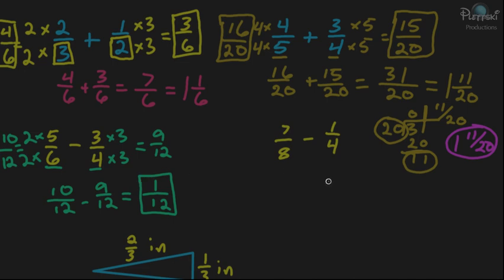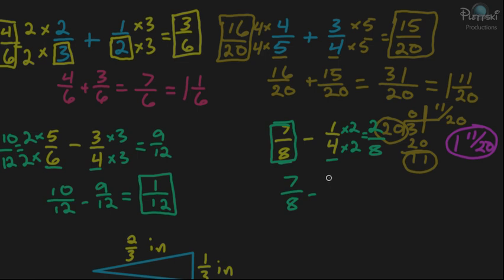One more subtraction problem: we have 7 eighths minus 1 fourth. You need like denominators, and in this case the least common multiple of the denominators is 8. An 8 goes into 8 once, and a 4 goes into 8 two times. So 7 eighths we don't have to change at all. To get an 8 on the bottom for the fourth, we multiply the top and bottom by 2, giving us 2 over 8. So our new problem is 7 eighths minus 2 eighths. Leave the denominator the same and subtract the numerators: 7 minus 2 gives you 5, so the answer is 5 eighths.